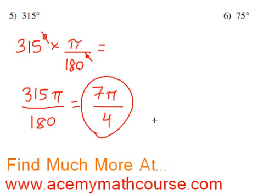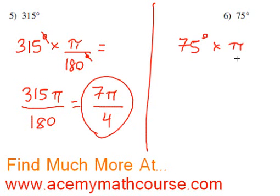So that's it, 7π over 4. What about 75 degrees? Well, we also multiply by π over 180 degrees. Degrees once again cancel out, and we get 75π over 180.